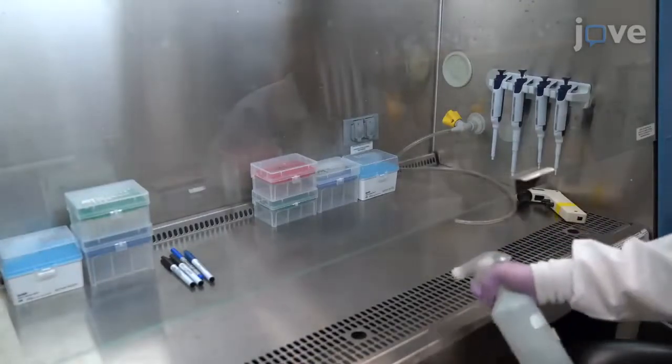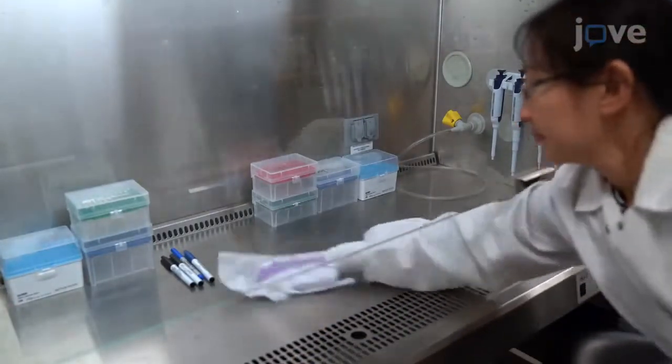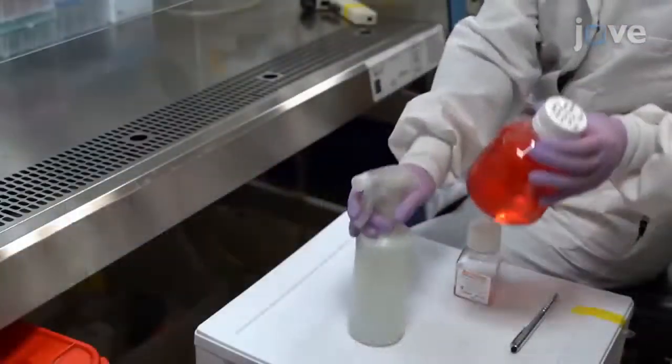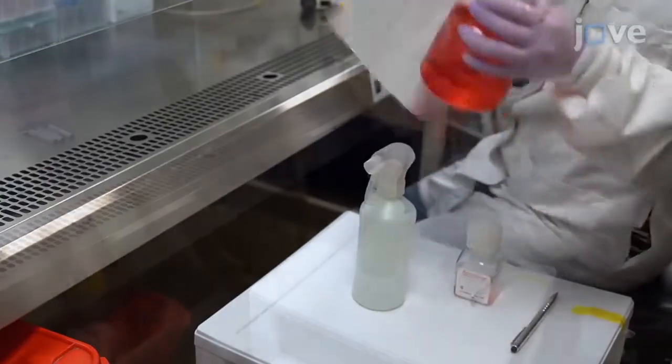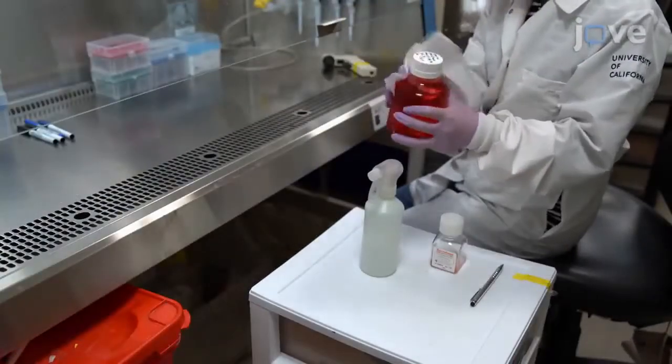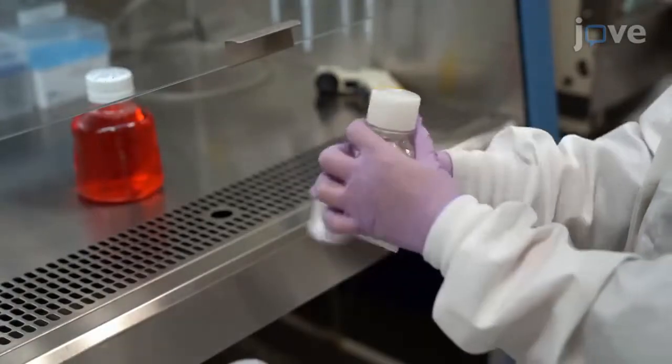Spray the tissue culture hood surface with 70% ethanol and wipe down the sprayed surface with paper towels. Next, spray the medium and cell detachment solution bottles with 70% ethanol and wipe them down with paper towels. Transfer the cleaned bottles into the tissue culture hood.